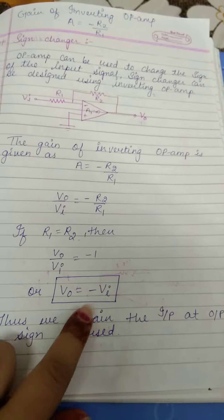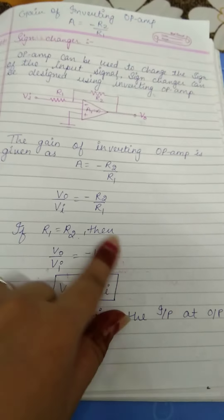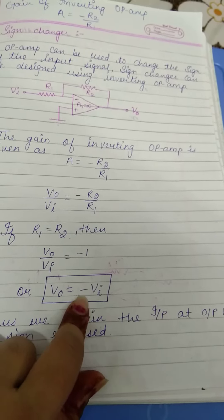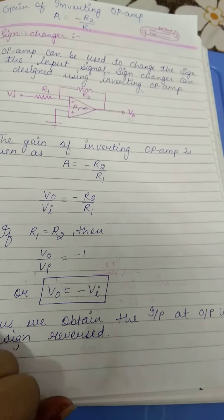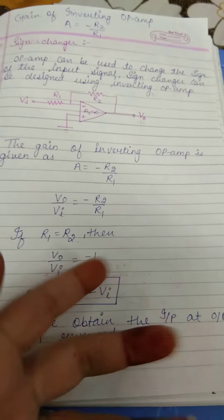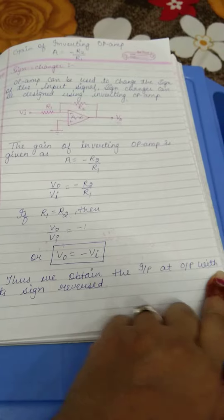So output is equal to minus of input, so sign change. If we have input Vi, then the output we get is minus Vi. If we have input minus Vi, then we get minus of minus Vi. Thus we obtain the input at output with its sign reversed.